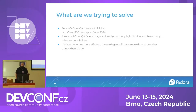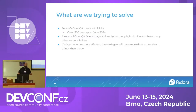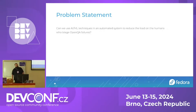Getting into more of what we're trying to solve: Fedora's OpenQA instance runs a lot of jobs. So far this year we've been doing over 1,700 jobs per day. The triage of that falls onto mostly two people, both of whom have other things to do. If we can make this triage process more efficient — if we can get the computer to do at least some of their work — that means they have more time, or we can start expanding the amount of testing we're doing. Can we use AML techniques in an automated way to reduce the load on the humans doing triage when tests fail?